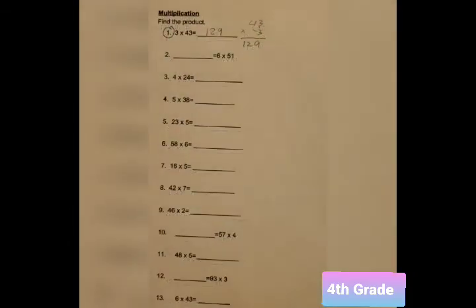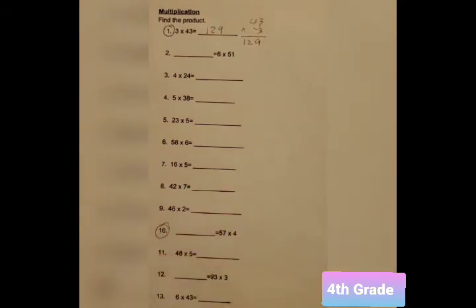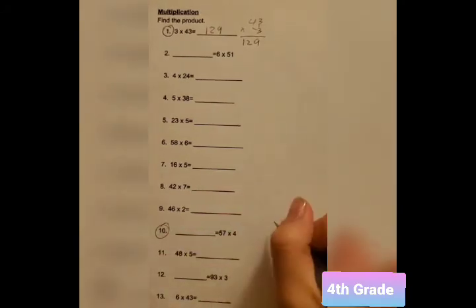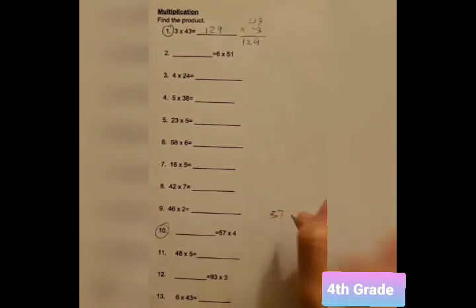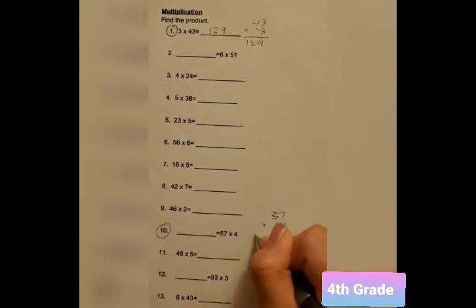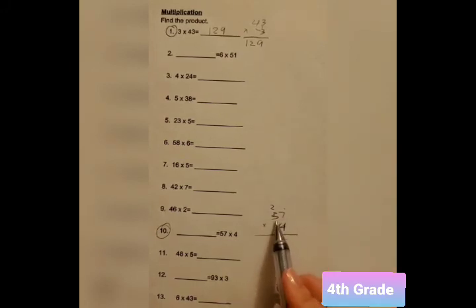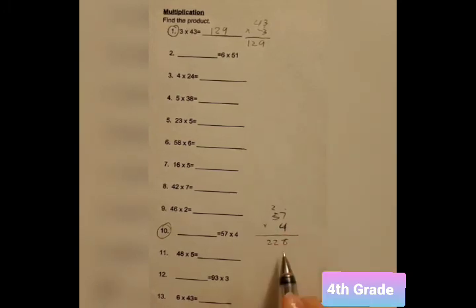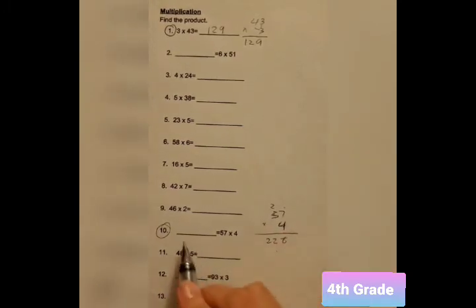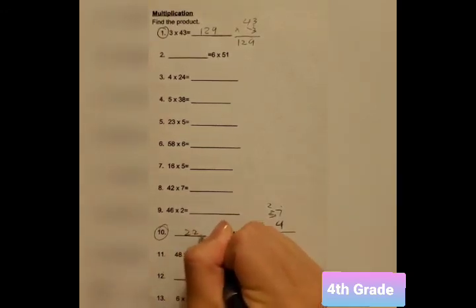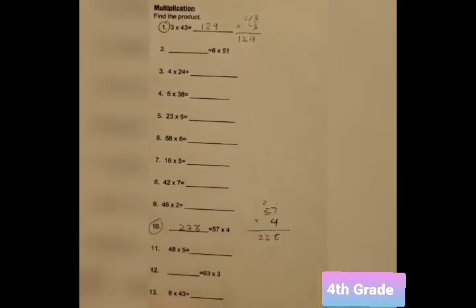Alright, let's do one more. So, we got, we'll be doing number 10. Number 10, we'll set up the equation. 57 times 4. Now, 4 times 7 is 28. And 4 times 5 is 20. But we got to add 2, so it'll be 22. And we bring this over here. And we write our answer 228.